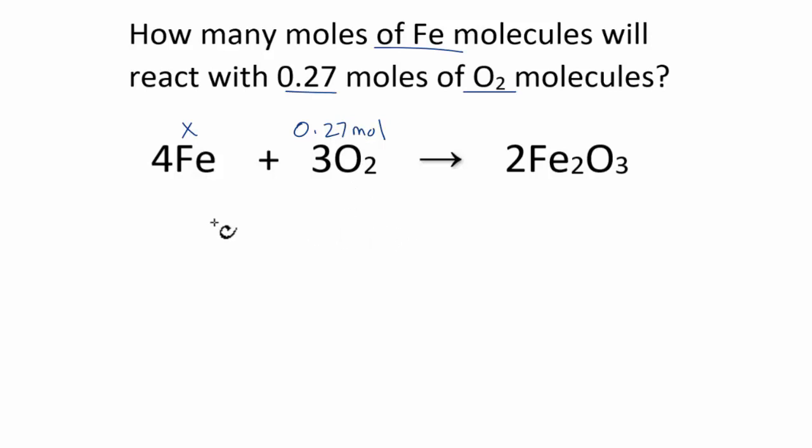Next, we could just look at a ratio. We could say x is to 4 as 0.27 is to 3. And then we could solve for x. 3 times x, 3x, equals 1.08. We divide both sides by 3. x equals 0.36, and that's going to be the moles of Fe. So we're pretty close with our estimation there. So this is one way to do it.